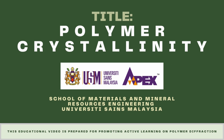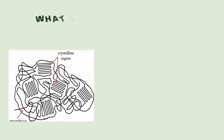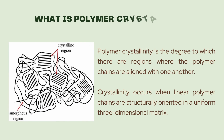Hello viewers, today we are going to talk about polymer crystallinity. Polymer crystallinity is the degree to which there are regions where polymer chains are aligned with one another. Crystallinity occurs when linear polymer chains are structurally oriented in a uniform 3D matrix.